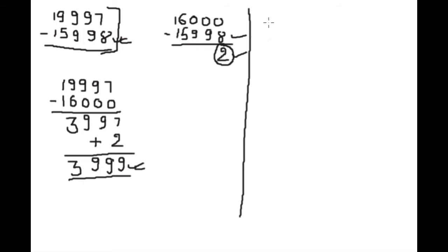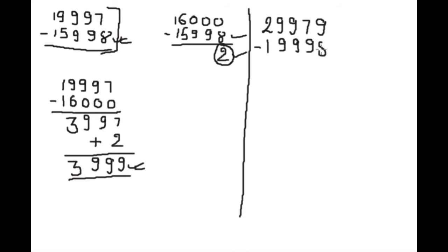Now take another example with a five-digit number: twenty-nine thousand nine hundred seventy-nine subtract nineteen thousand nine hundred ninety-eight. The smaller number is nineteen thousand nine hundred ninety-eight, and the nearest whole number to it is twenty thousand. Twenty thousand is two extra than the actual number.